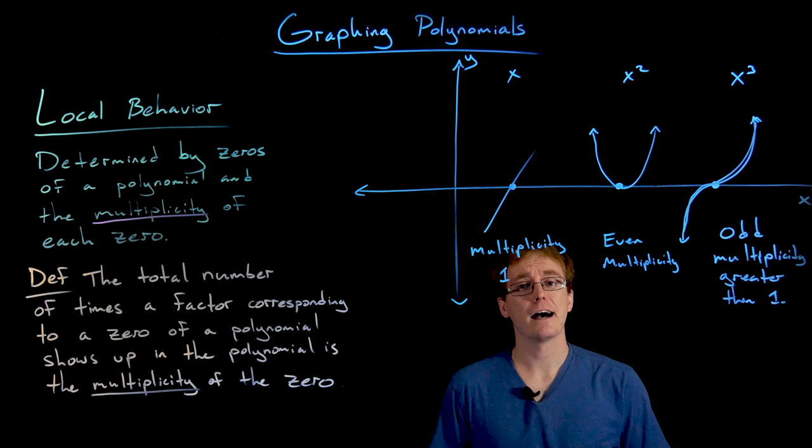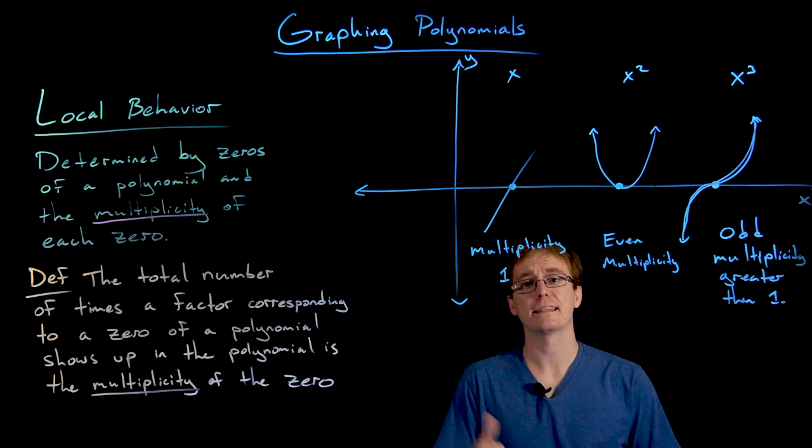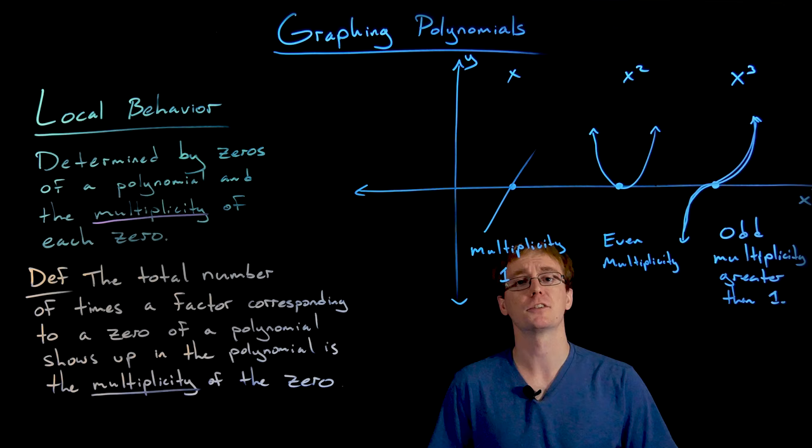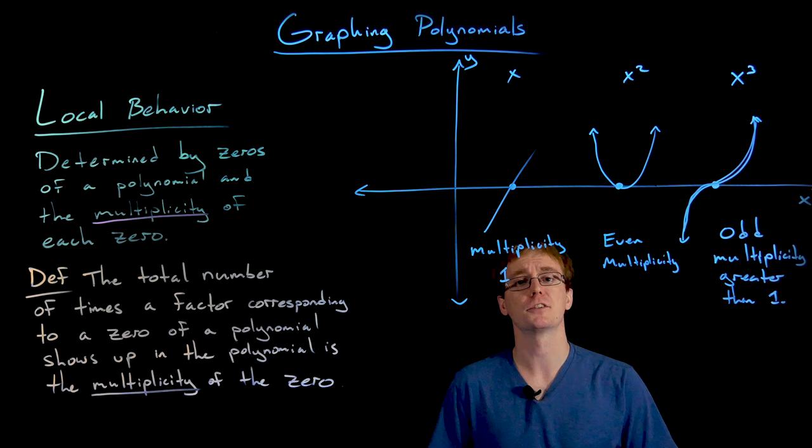Now we have enough information to quickly sketch the graph of a polynomial function. We use the leading term to identify the end behavior, and we find the zeros and their multiplicities to determine the local or short-run behavior. Once we have both the local and end behavior, we can put it all together to sketch a complete graph.